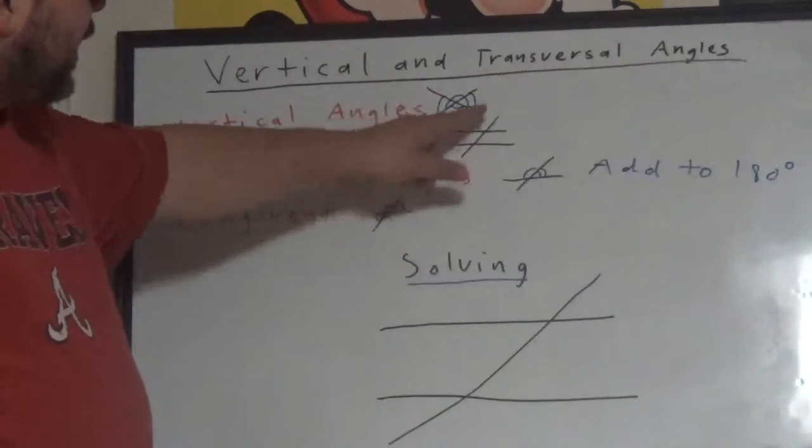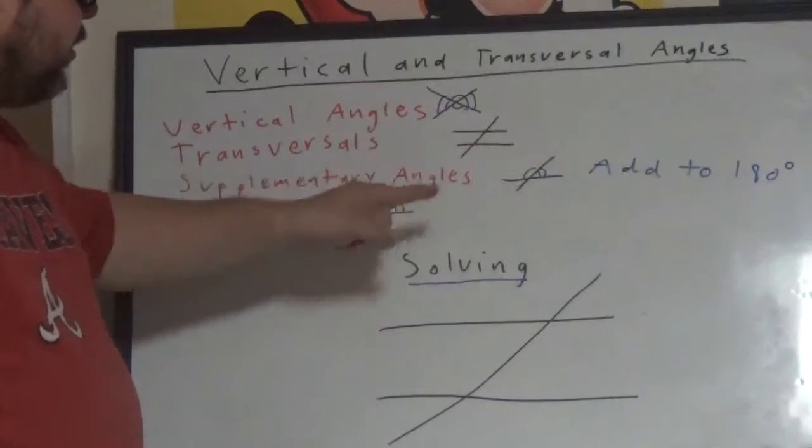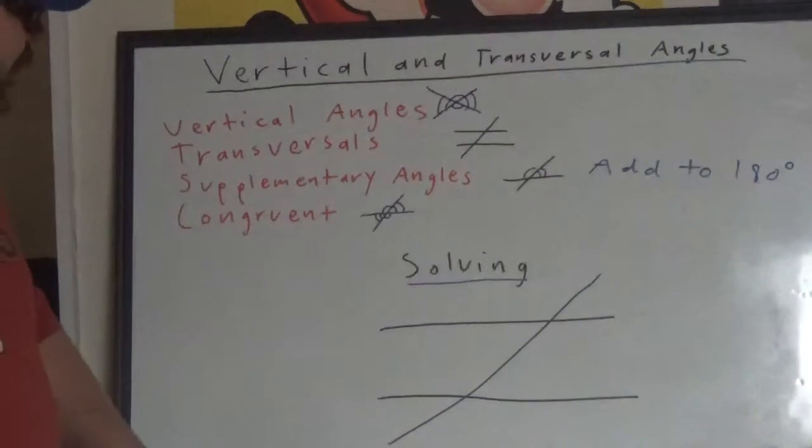We have two parallel lines, and we have a third line intersecting both of them at an angle.